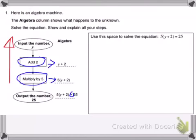So let's take a look at what I mean here. I'm going to recopy the equation to give me some space to solve it. So I have 5 times the quantity y plus 2 equals 25. Now what I'm going to do is work these steps backwards to deconstruct.